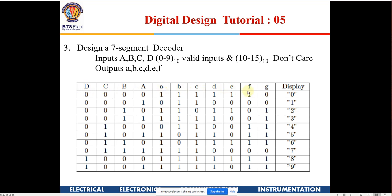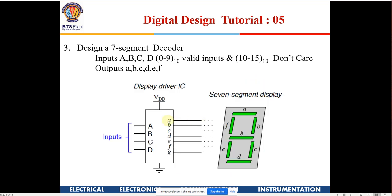You have 4 inputs — A, B, C, D — and 7 different outputs. Physically there will be 7 different lines going to the display; each line lights up one of the LEDs.